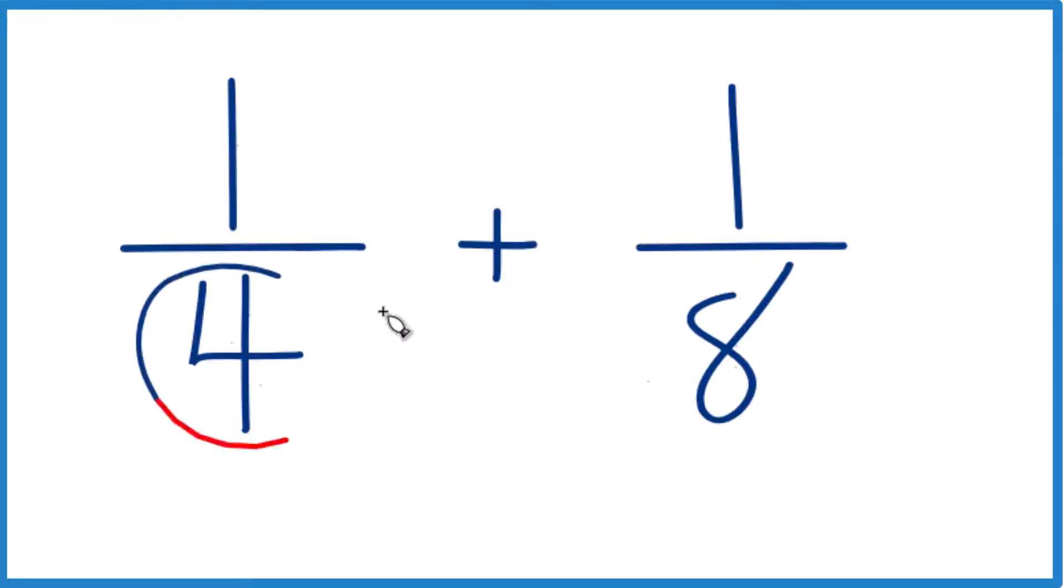What we need is to have the denominators here to be the same, because if we have the same denominators, we just add the numerators, and we'll have our answer. So why don't we do this?